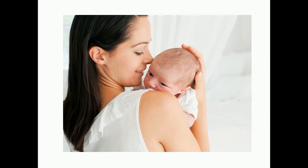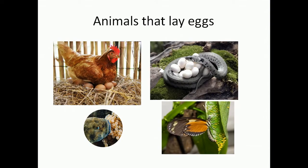Now we shall study the animals which lay eggs — which do not give birth to their young ones. Many animals like birds, reptiles, fish, and insects reproduce by laying eggs. After the egg is laid, the baby develops inside the egg, and all the food needed for the baby to develop is contained in the egg itself.